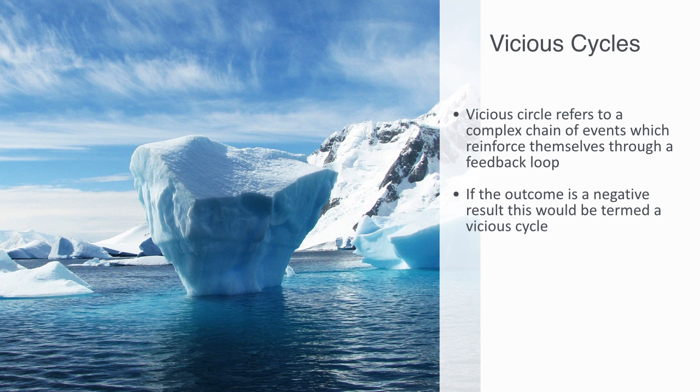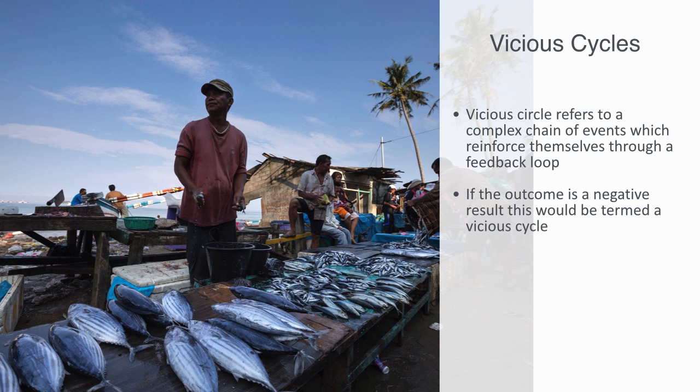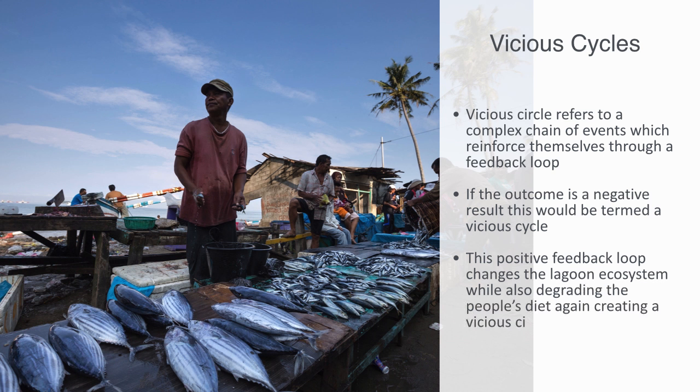As another more concrete example, we might cite the pollution of the lagoons that surround small South Pacific islands. Many South Pacific communities now consume imported packaged and canned foods. Depositing of the empty cans and other waste in dumps, rainwater runoff from the dumps pollutes the lagoons, reducing the quality of fish and other seafood. With less seafood, people are forced to buy more and more cheap canned food. The pollution becomes worse and the lagoon has fewer fish. This positive feedback loop changes the lagoon ecosystem whilst also degrading the people's diet, again creating a vicious circle.